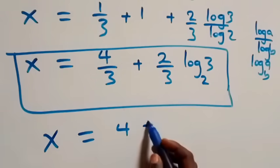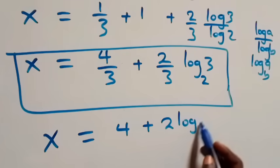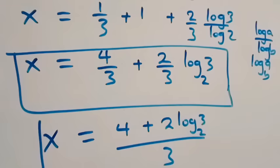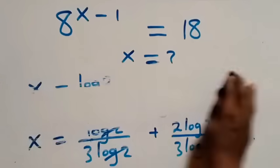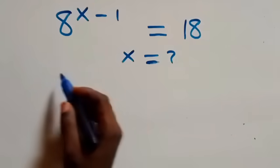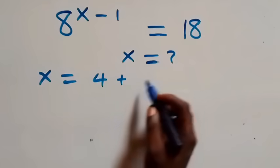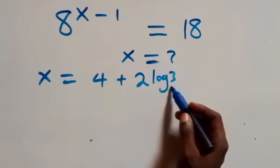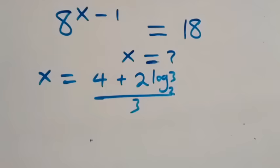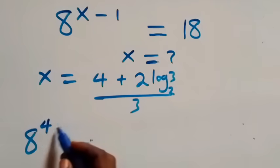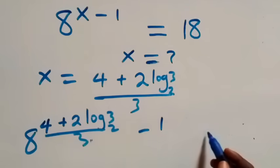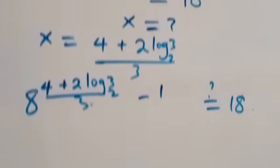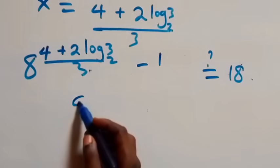So x equals (4 + 2 log₂3) / 3. Now let's check if this satisfies the given problem. We substitute x equals (4 + 2 log₂3) / 3 back in, and what we have becomes 8 raised to power (4 + 2 log₂3) / 3 minus 1, which should equal 18.